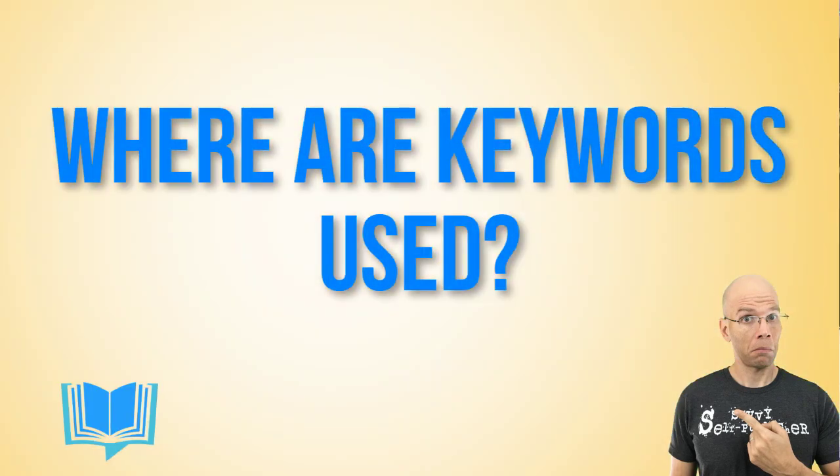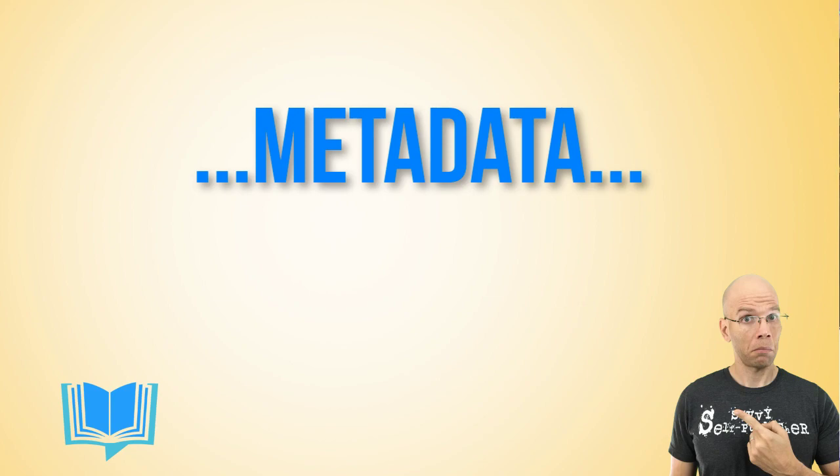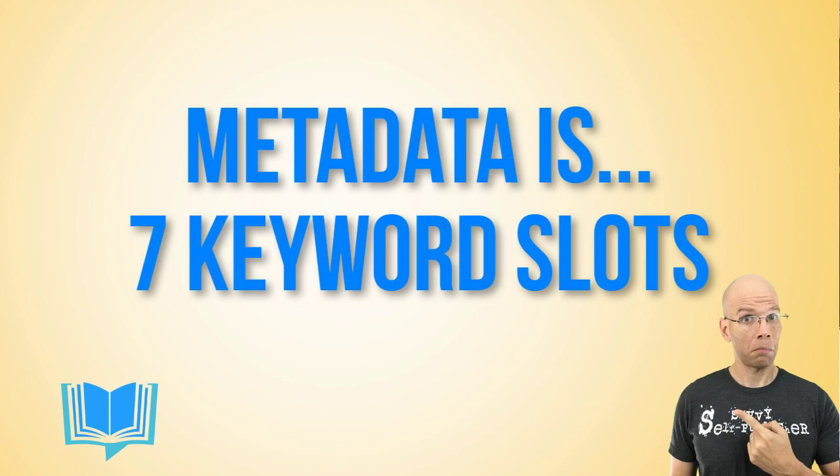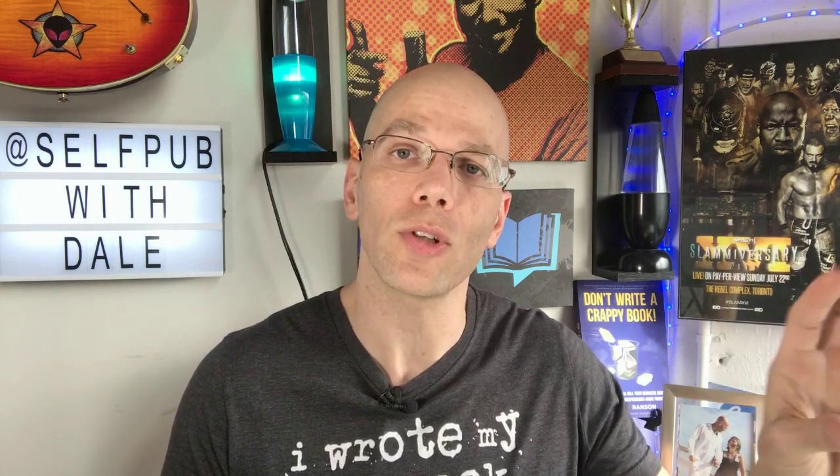Where are keywords used? This is in what's called metadata. Metadata is your title, subtitle, series name, description, the seven keyword slots with 50 characters per slot, and so much more that entails the full description of your product. For those in the fiction realm, keywords function probably best inside those seven keyword slots or within your book description. Those in nonfiction have an advantage in that you can utilize keywords within most, if not all, of your book's metadata.